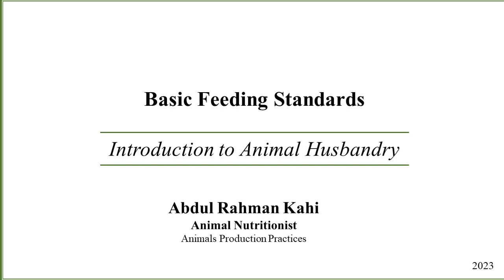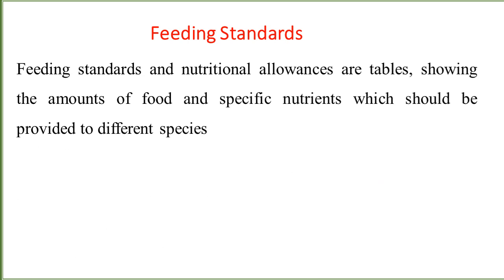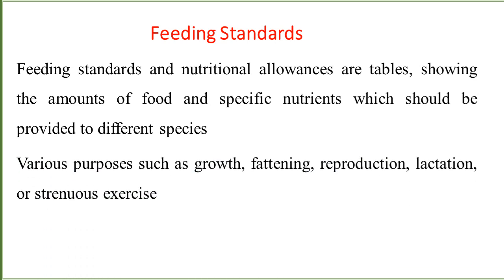Feeding standards, or feeding allowances, are tables showing the amount of food and specific nutrients which should be provided to different species. These allowances are listed in tables containing the different requirements of the body, which are ultimately provided to the animals for their production, lactation, growth, and reproduction.